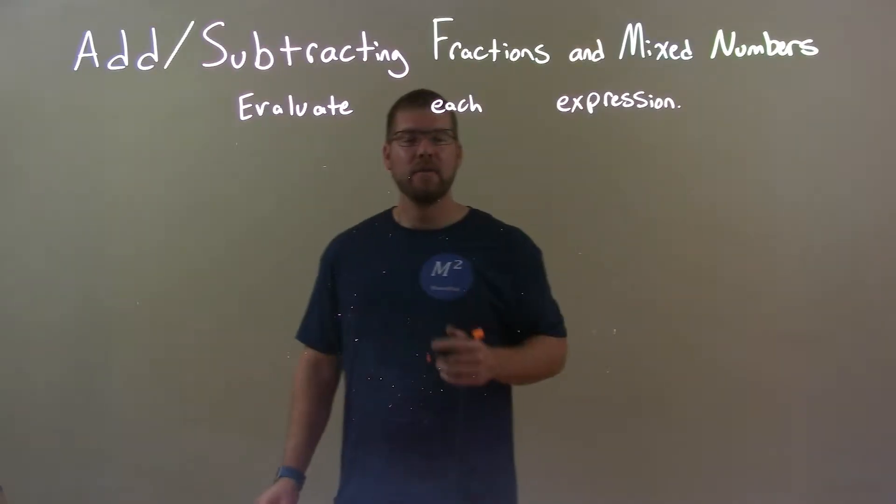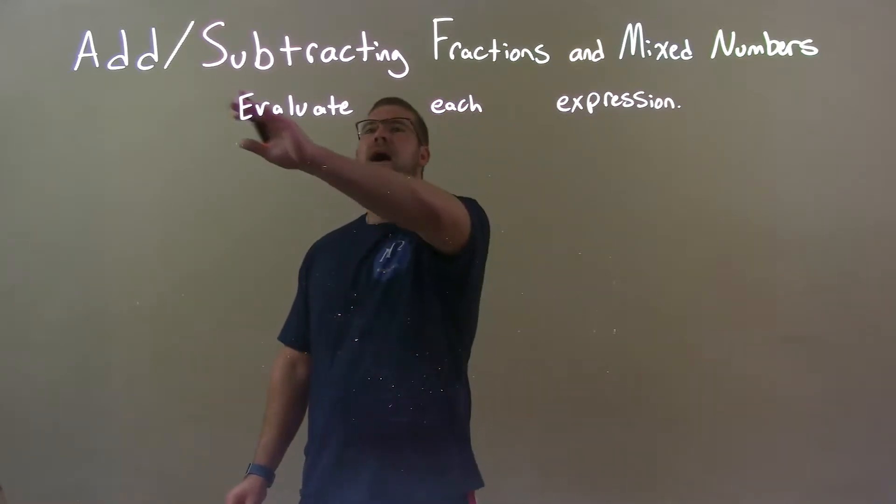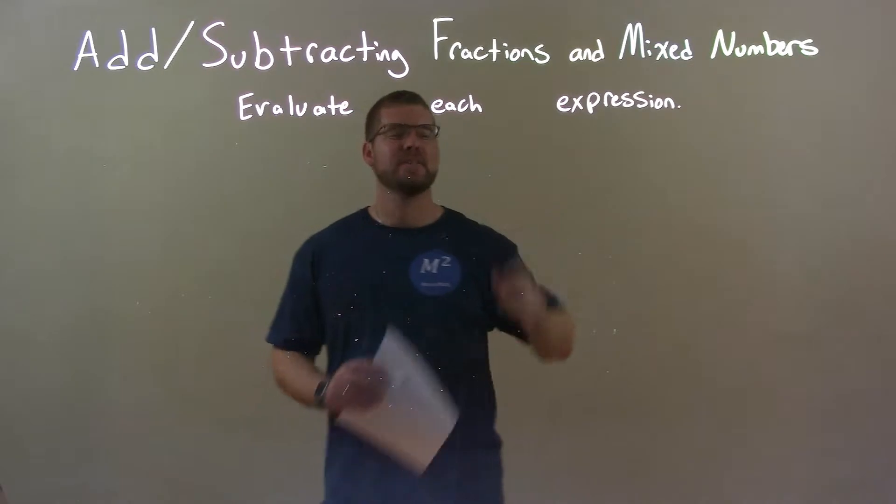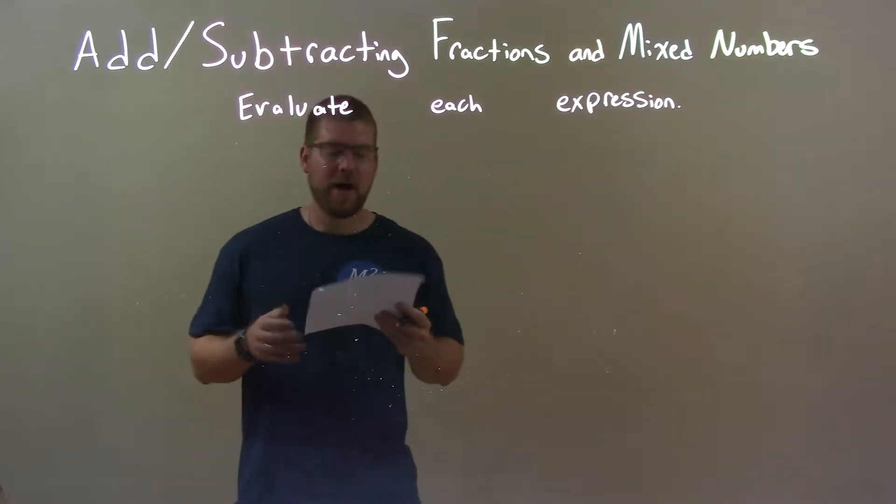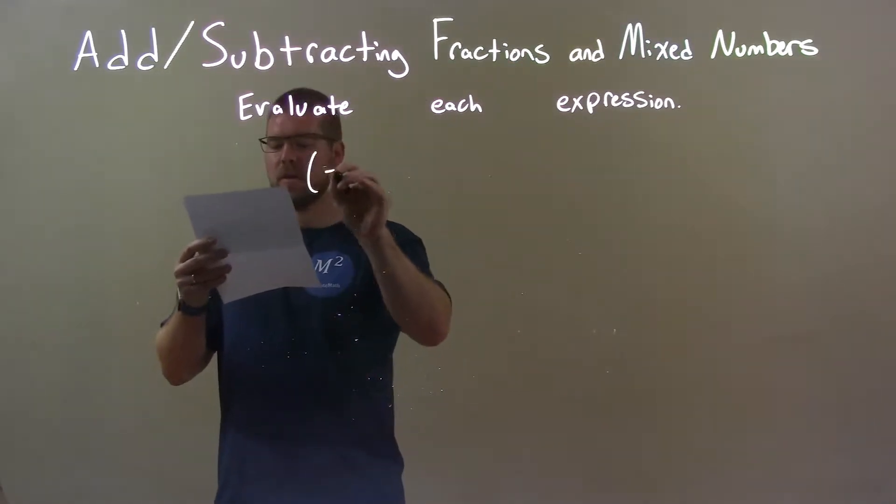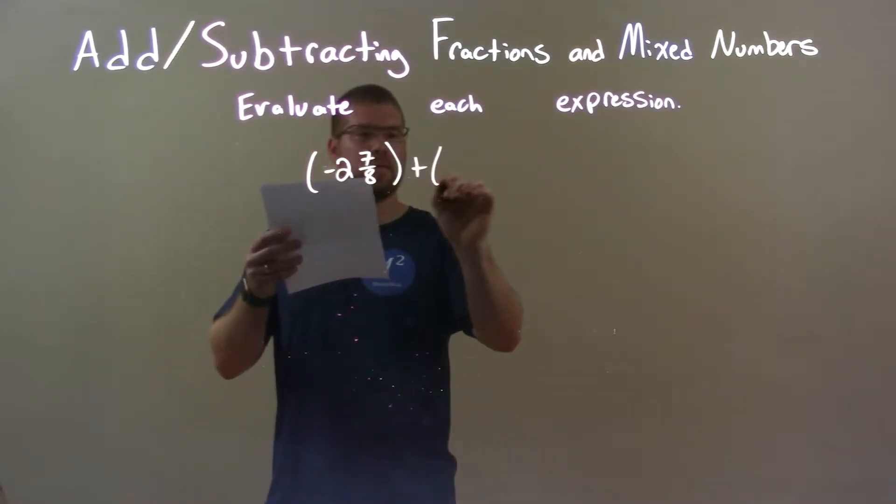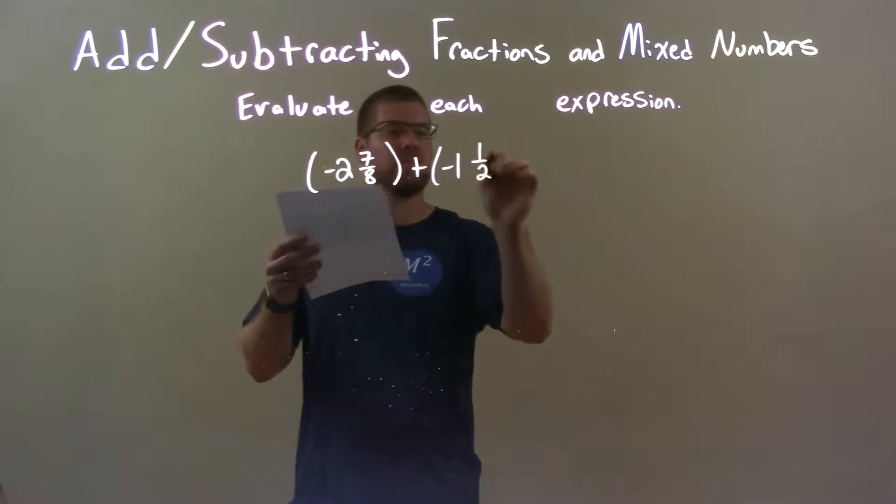Hi, I'm Sean Gannon, and this is MinuteMath, and today we're going to learn about adding and subtracting fractions and mixed numbers, and we're going to evaluate each expression. If I was given this expression: negative 2 and 7 eighths, plus a negative 1 and 1 half.